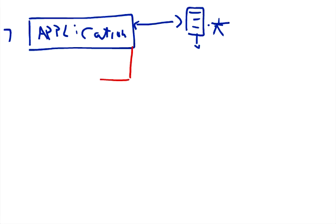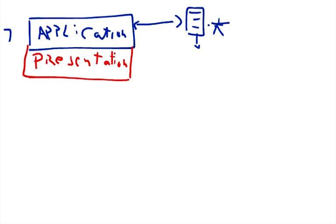Under the application layer we have another layer which is called the presentation layer. The main purpose of the presentation layer is to convert the data from machine-readable format into human-readable format or application-readable format. That is why it is called the presentation layer.